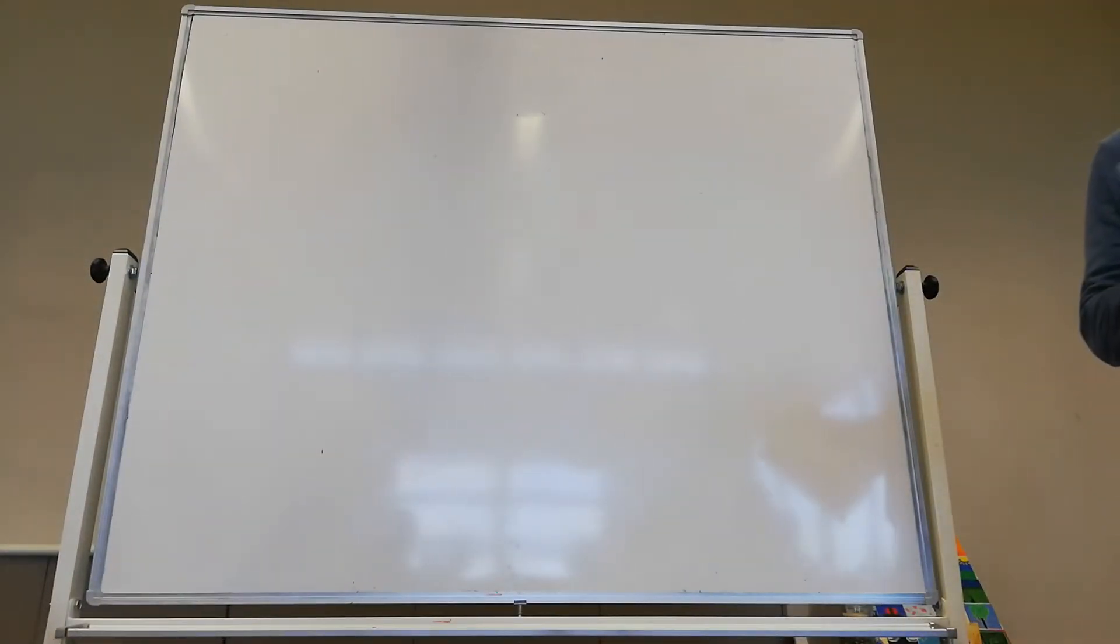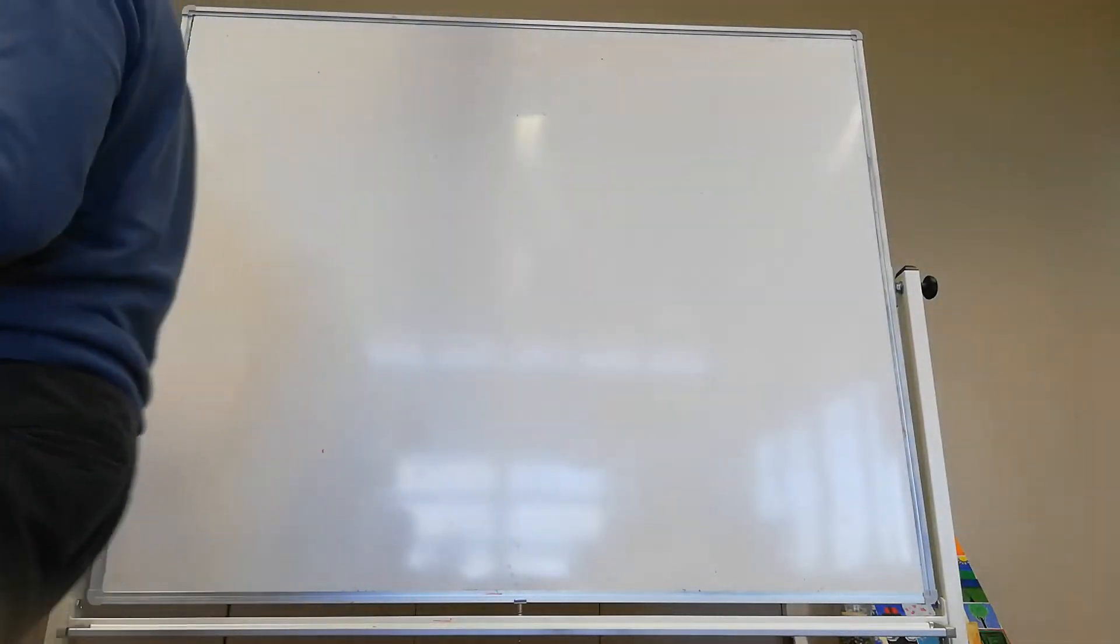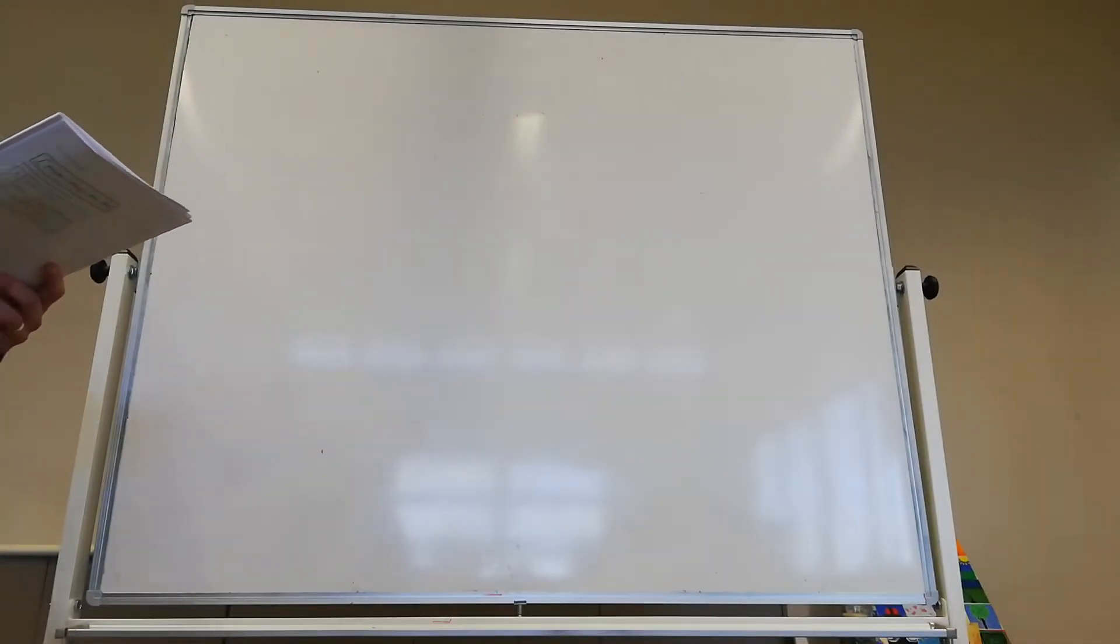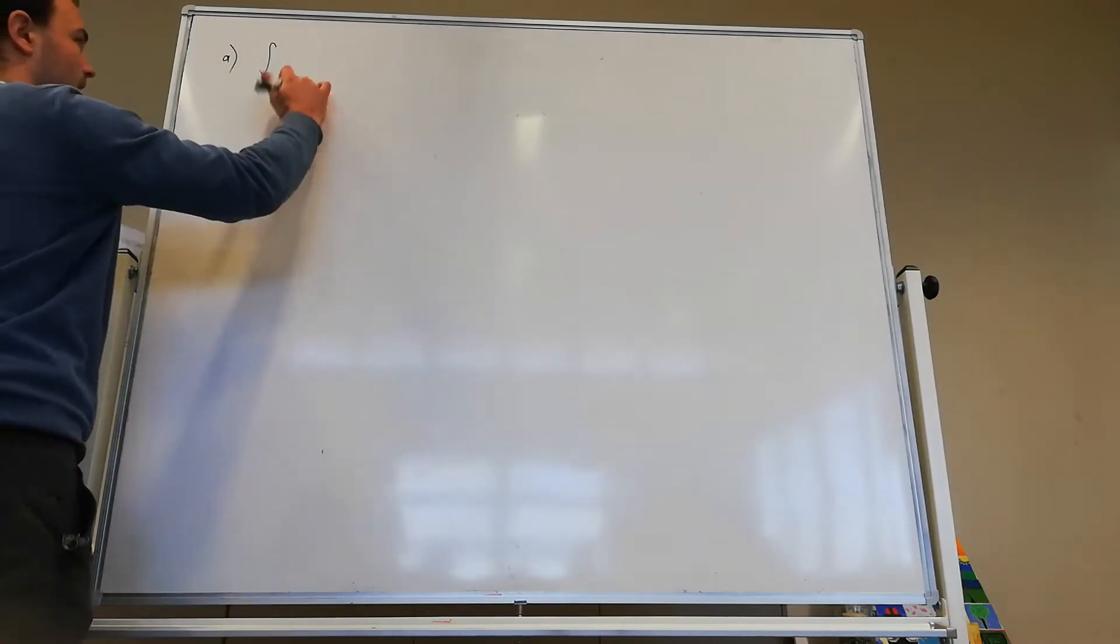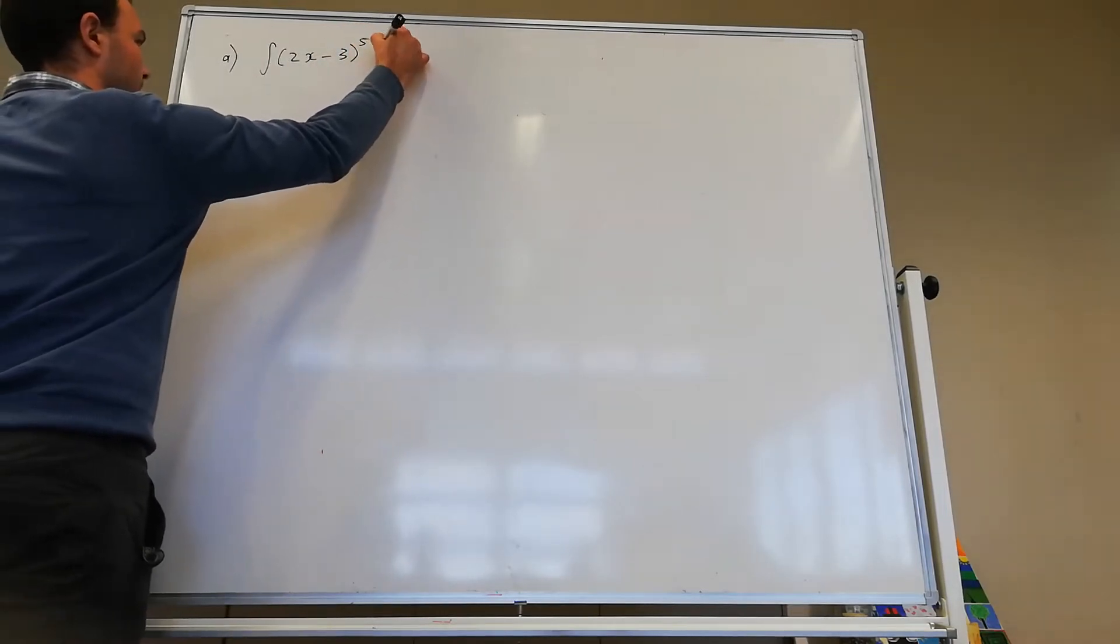So we're just looking at some more complex rules for integration. We're integrating the function f of ax plus b. So I've got a list of rules at the top there. I won't write them up here, I'll just refer to them. But here is our first one. We have find the integral of 2x to the power of 5.